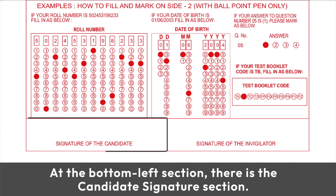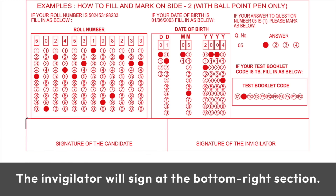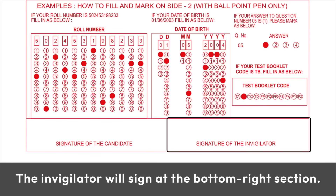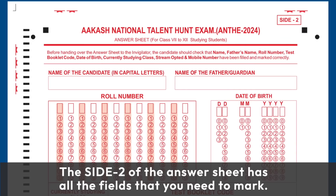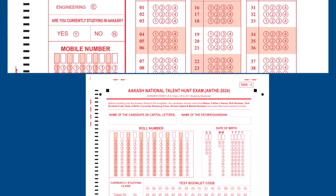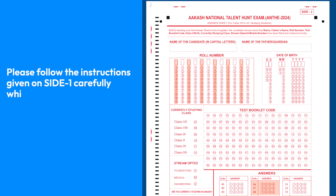At the bottom left section, there is a candidate's signature section. Put your signature in the given space. The invigilator will sign at the bottom right section. The side 2 of the answer sheet has all the fields that you need to mark. Please follow the instructions given on side 1 carefully while filling and marking your responses.